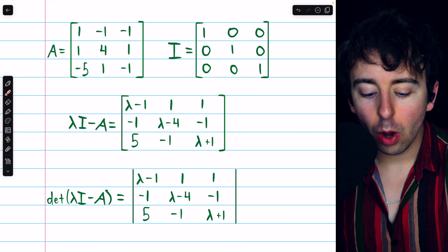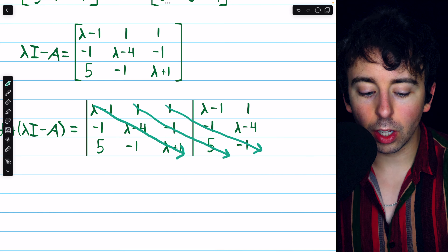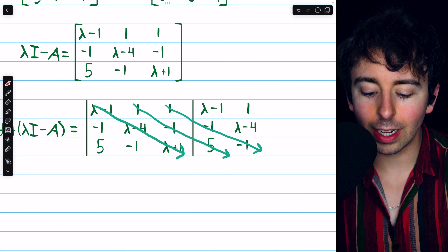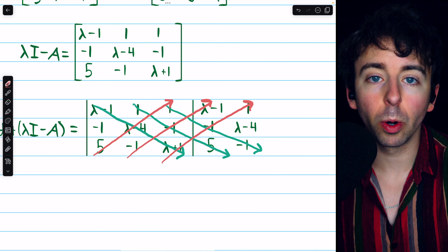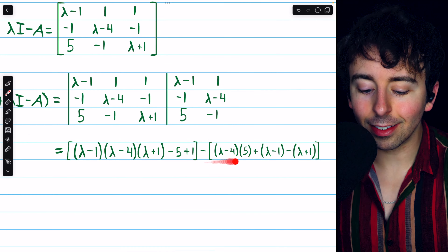So, the determinant of lambda I minus A — this is a 3 by 3 matrix, so to find the determinant, probably the easiest way is to use the diagonal trick. That means we're going to take the first two columns of this matrix and rewrite them to the right. Then, what we have to do is multiply along the rightward diagonals and add those products together, and then also multiply along the leftward diagonals, and subtract their sum from the rightward diagonals.